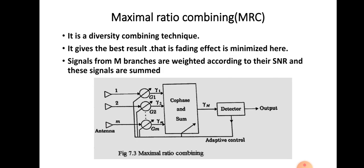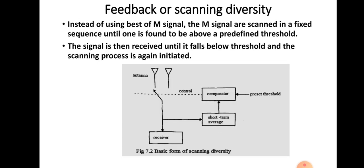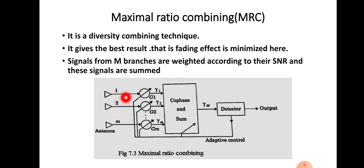Maximal ratio combining (MRC) is a diversity combining technique that produces the best result among all space diversity methods. There are m antennas, and the signals from each branch are weighted by factors γ₁, γ₂, …, γₘ according to their signal-to-noise ratio. If the SNR is low, the weight is high; if the SNR is high, the weight is low. After weighting, the signals are passed through a phasing circuit to make them co-phased before summing.